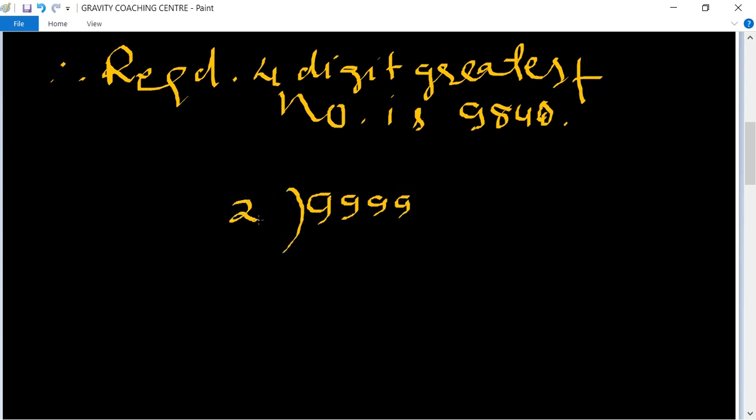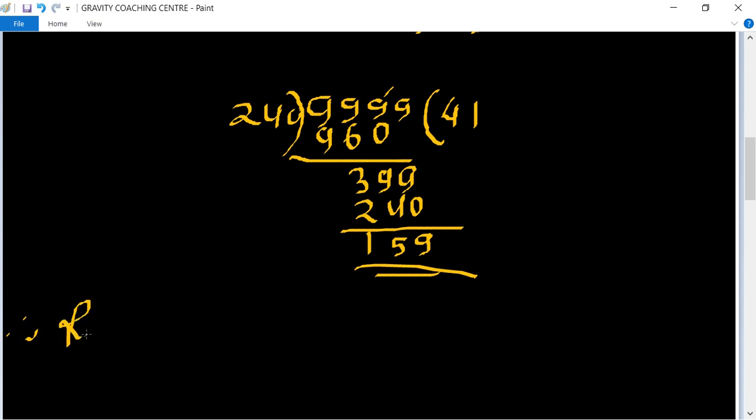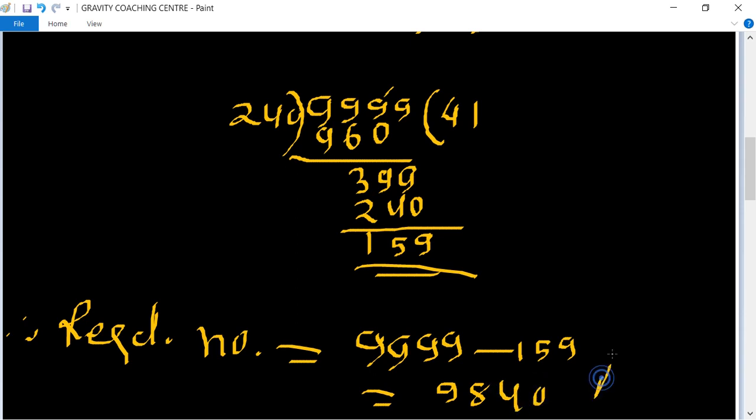We can also divide 9999 by 240. First table of 4: 4, 0, 0, 4 times 4 is 16 carry 1, 9 minus 6 is 3, 9, 9. Table 1 times 24, 0, 9, 5, 1. So 159 is the remainder. Therefore the required number equals 9999 minus 159 equals 9840, which is the required answer.